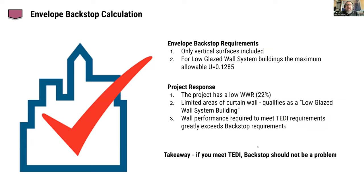The envelope backstop is different in this version of the stretch code — the old formula with A plus B plus C is gone. We're just looking at the vertical surfaces, and there are two different pathways. This particular project has a low window-wall ratio and very limited curtain wall, so it qualifies as a low-glazed wall system building with a maximum allowable U-value of 0.1285 average. To meet the TEDDY requirements, the project actually has to be much better than that backstop. The takeaway is that if you're going to meet the TEDDY, you'll meet the backstop without any particular problem for a project like this.